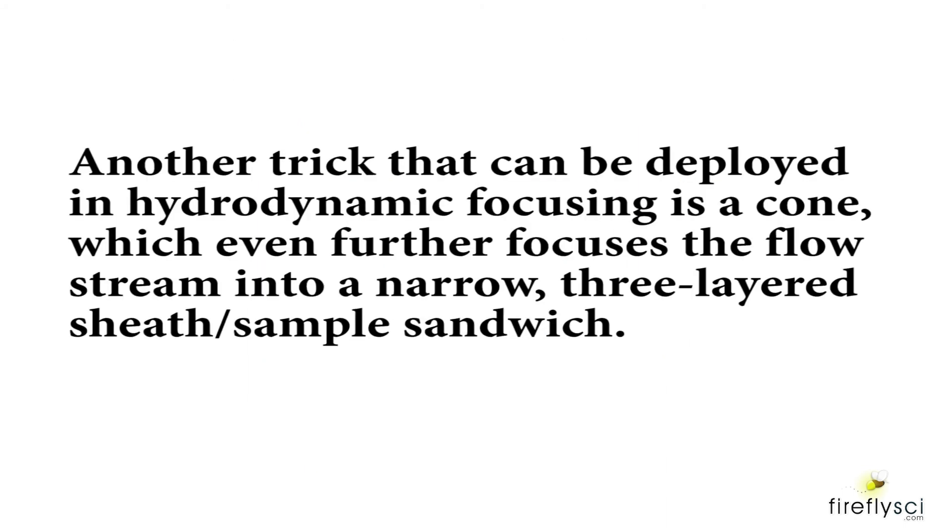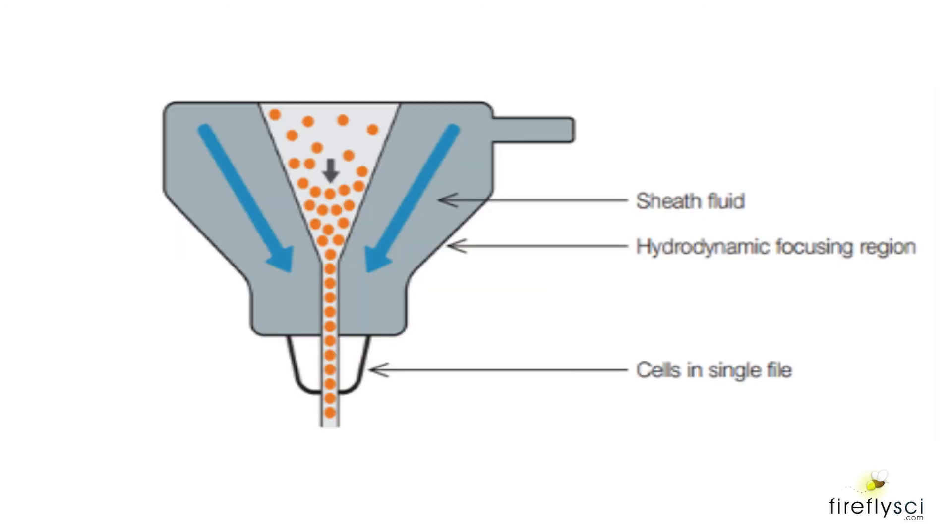Another trick that can be deployed in hydrodynamic focusing is a cone, which even further focuses the flow stream into a narrow, three-layered sheath-slash-sample sandwich. By manipulating the flow rates of the sheath, the core sample stream can be even further focused through the flow channel. It's important that the cone not have rough ridges in order that it can reduce any turbulence that might disturb the sheath layers or core stream.